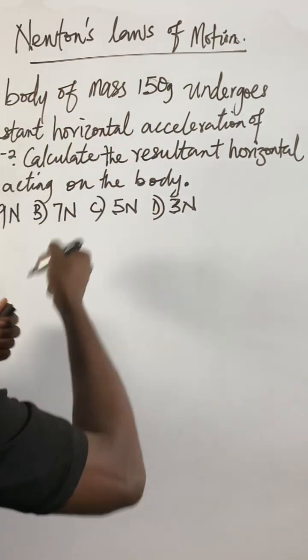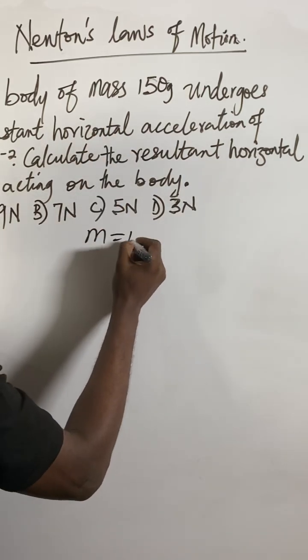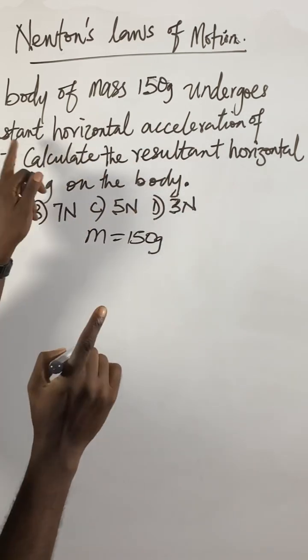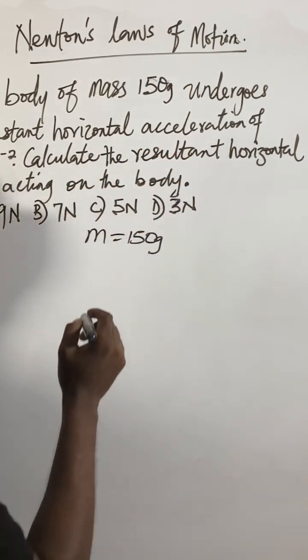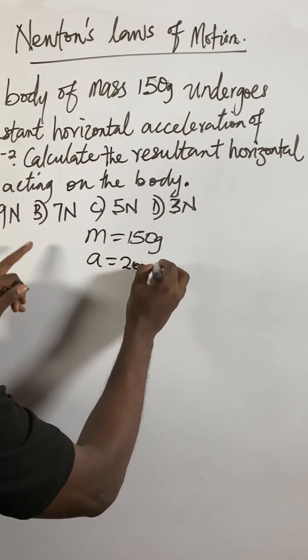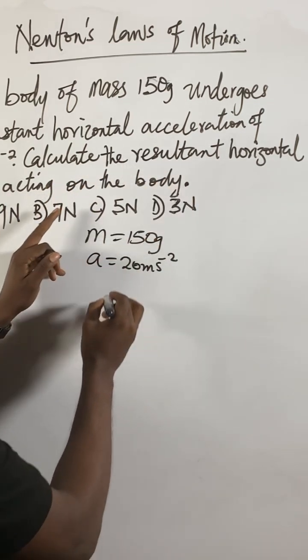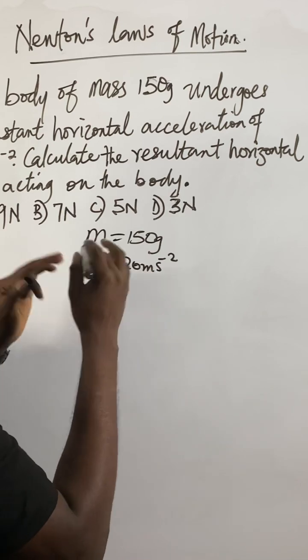Let's bring out the parameters. They give you mass, say mass now of 150 grams, undergoes a constant horizontal acceleration of 20 meters per second squared. Calculate the resultant horizontal force.